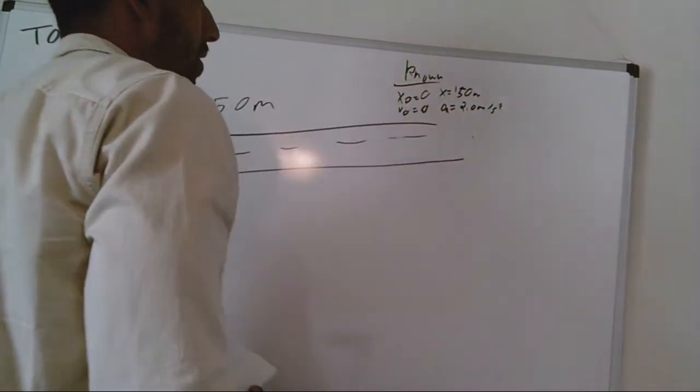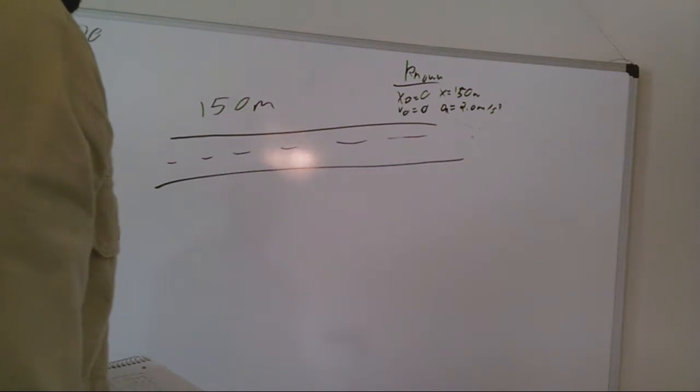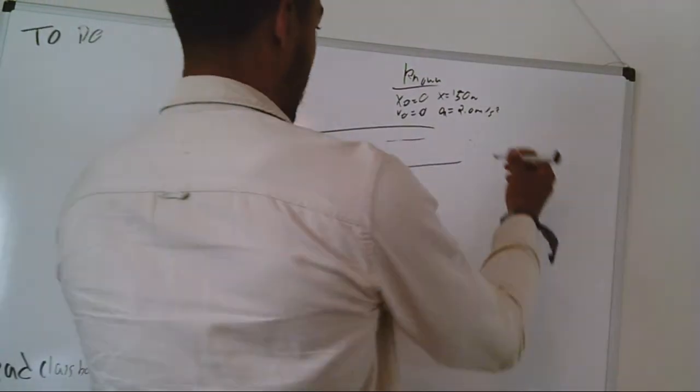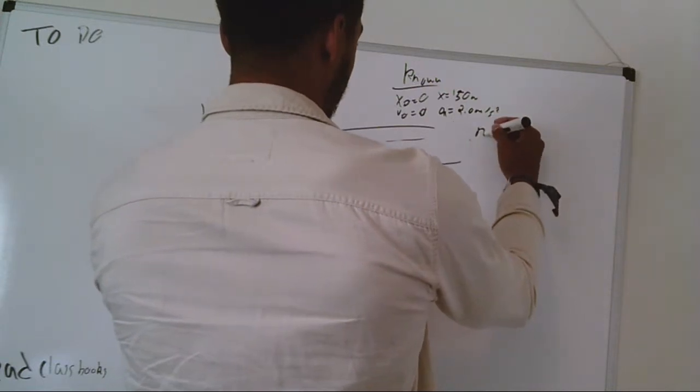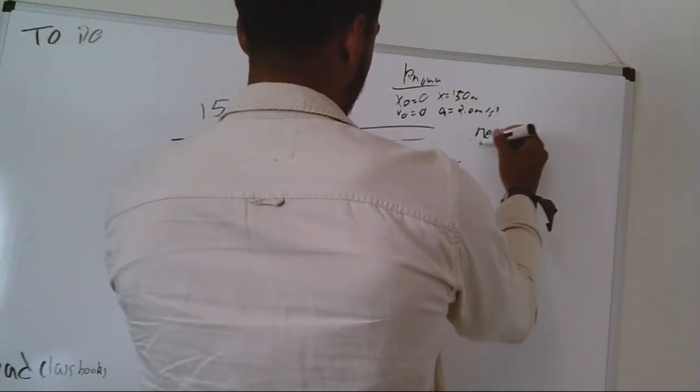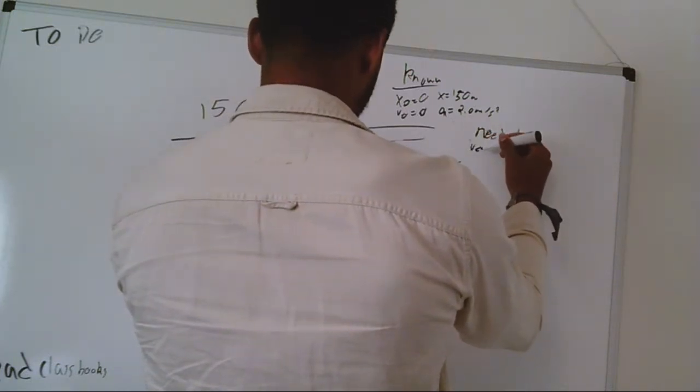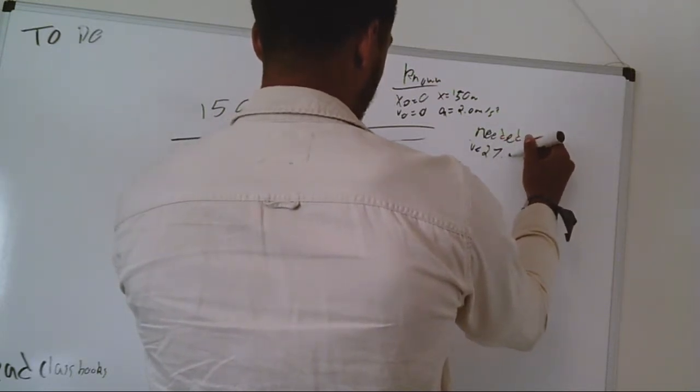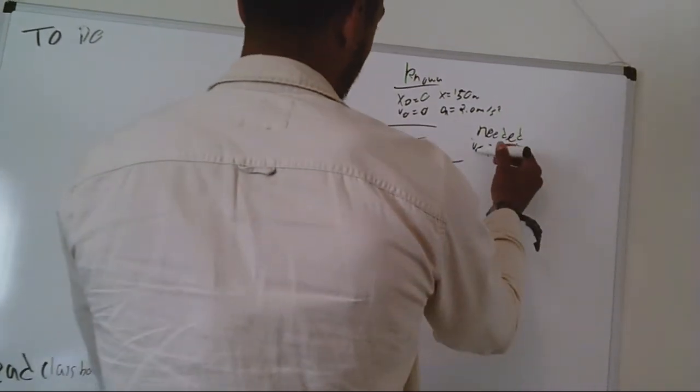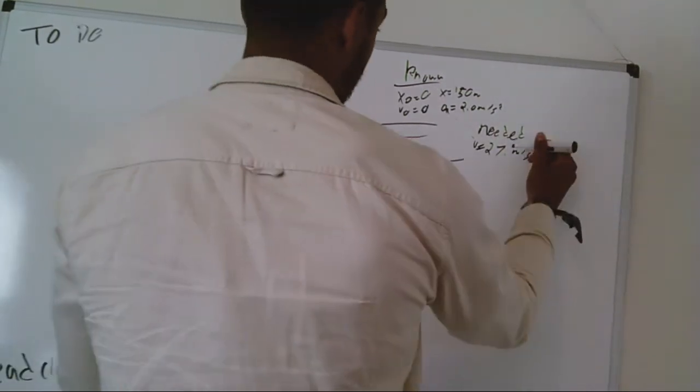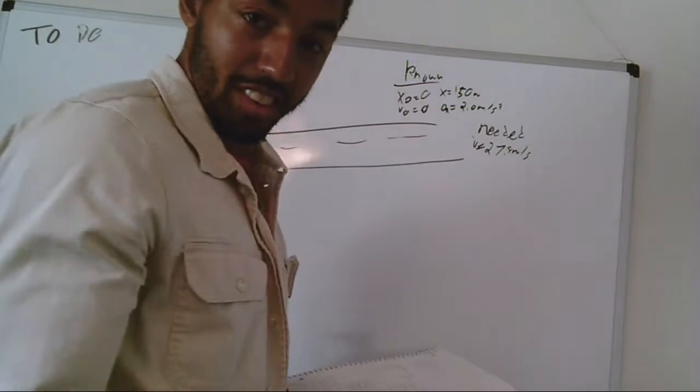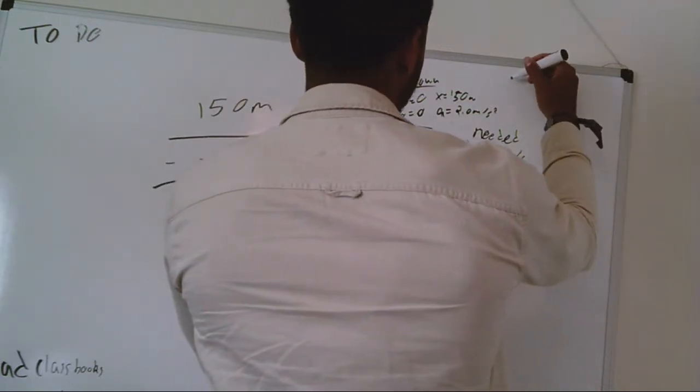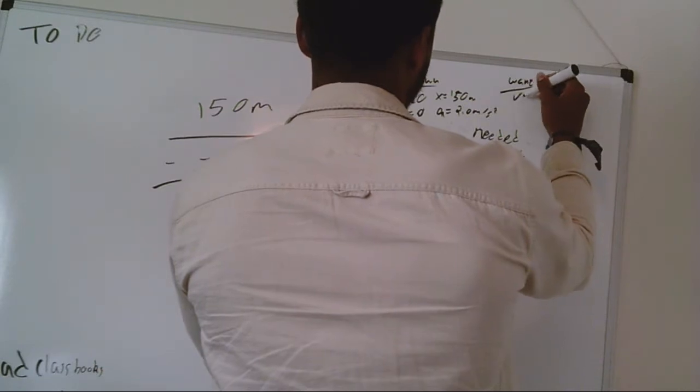And we need to find the velocity, this airplane can go at 150, it needs to go at 27.8, 270.8 meters per second velocity, it needs a velocity of 27.8 meters per second. And unknown, we're trying to find the velocity, the velocity.